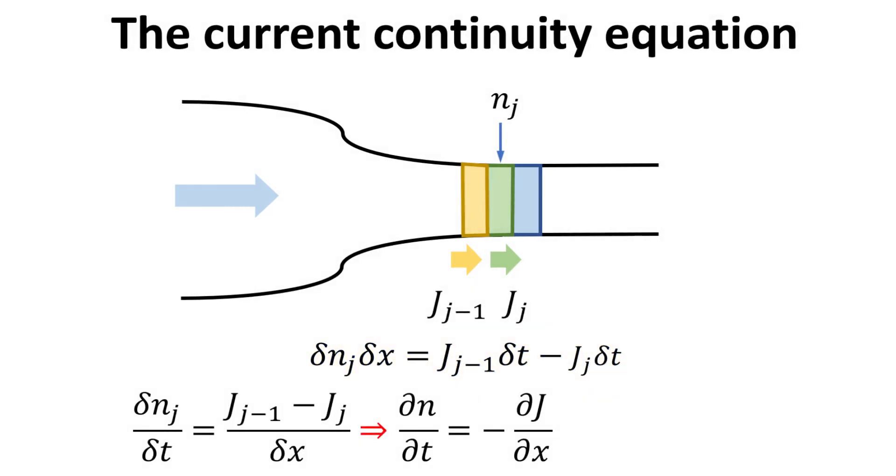To get it into its more familiar form, let's divide the equation by delta x and delta t. Then we obtain the more familiar continuity equation, stating that the rate of change of particle density has to balance the spatial gradient of the particle current.